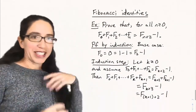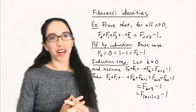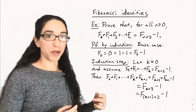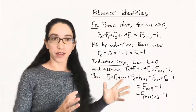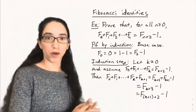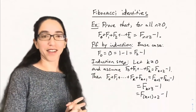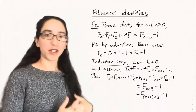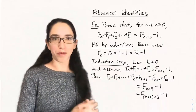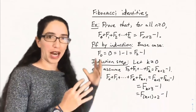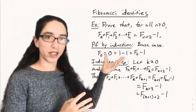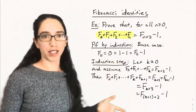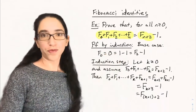Now let's look at some identities satisfied by these famous Fibonacci numbers. This is the content of section 6.1. There are a lot of these identities at the end of the section that are really fun to prove. I just want to do one example here to show how we can use induction to prove things about recursive sequences using the recursion.